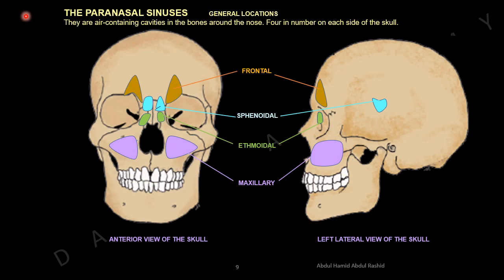The paranasal sinuses — general locations. Paranasal sinuses are air-containing cavities in the bones around the nose. There are four pairs in total — four on each side of the skull. The paranasal sinuses are: frontal sinuses, sphenoidal sinuses, ethmoidal sinuses, and maxillary sinuses.